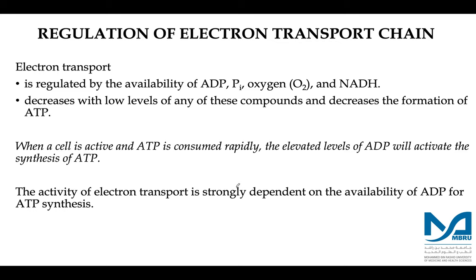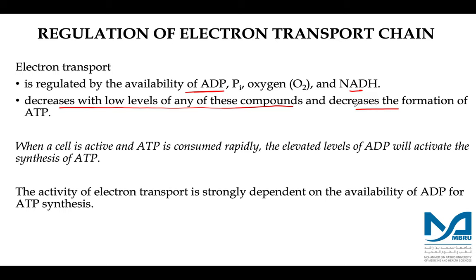We now come to the regulation of the electron transport chain. Unlike the regulation of glycolysis and the TCA cycle, regulation of the electron transport chain is pretty straightforward. Electron transport is regulated by the availability of oxygen, ADP, inorganic phosphate, and NADH. Electron transport decreases with low levels of any of these compounds, and decreases with the formation of ATP. If oxygen levels are low, the electron transport chain will be impaired.